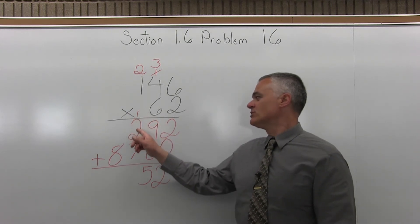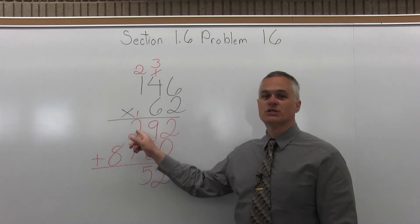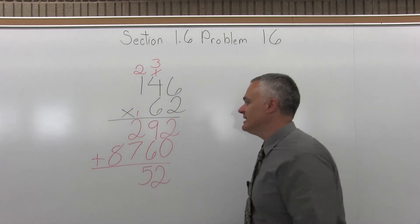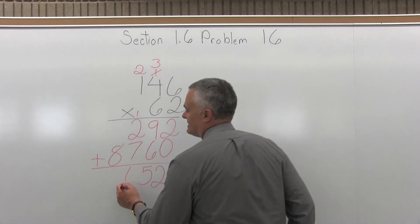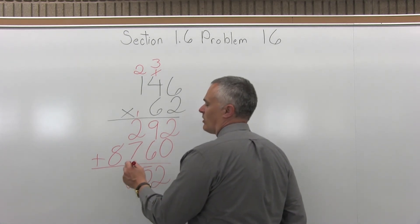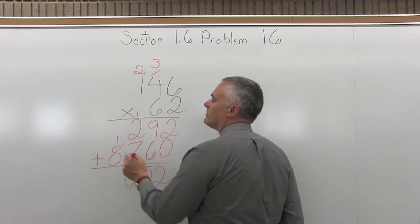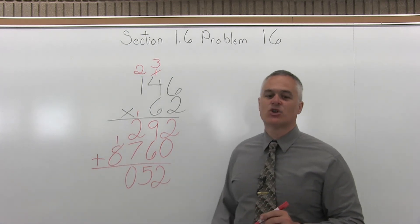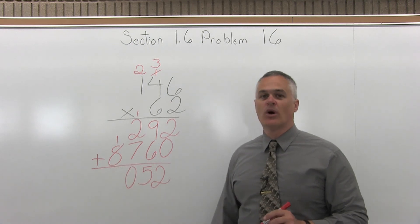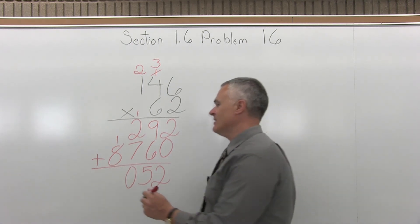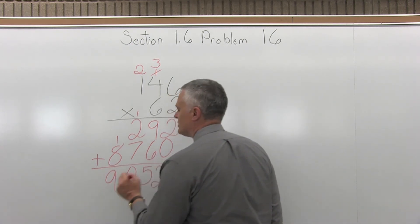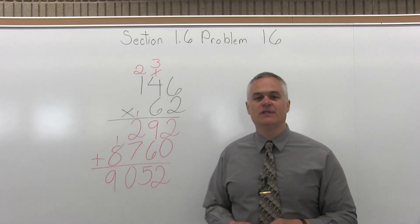And then I'll add 1 plus 2 plus 7. So 1 plus 2 is 3. 3 plus 7 is 10. So I'll put the 0 from the 10 under that column where I'm working, carry the 1 from the 10 to the top of the next column, and now I'll add 1 plus 8 more. 1 plus 8 more is 9. And now I'm done. So the answer is 9,052.